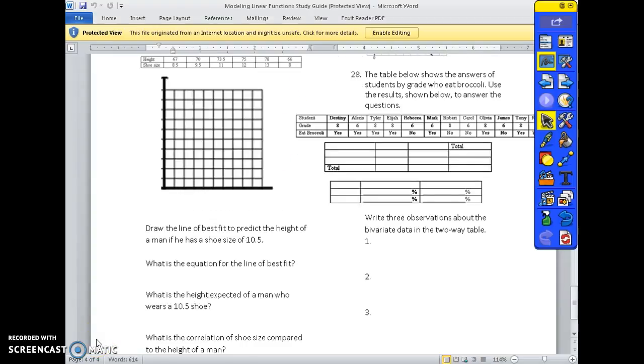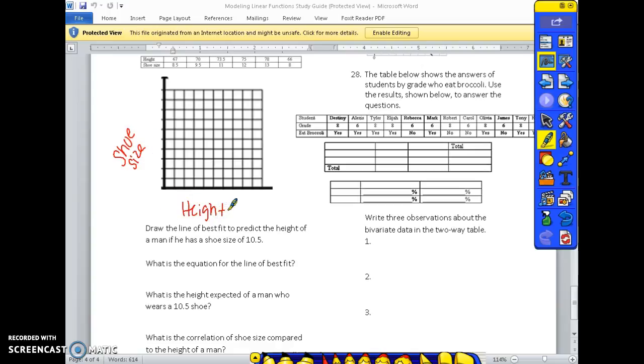All right. The graph shows the height and shoe size of men. So their shoe size depends on their height. So shoe size is our y. Height is our x. Our height ranges from 66 to 78. Our shoe size ranges from 8 to 13. Setting up the axes with these values.